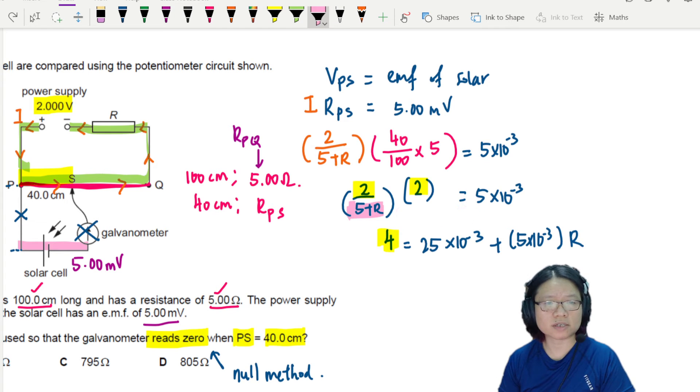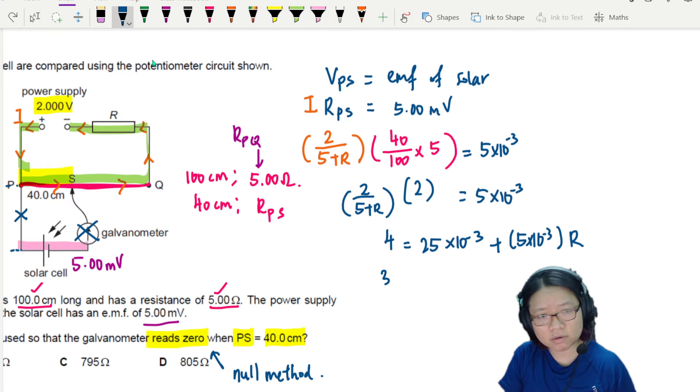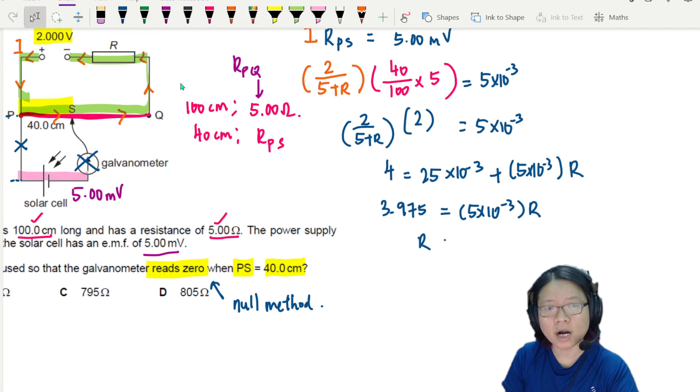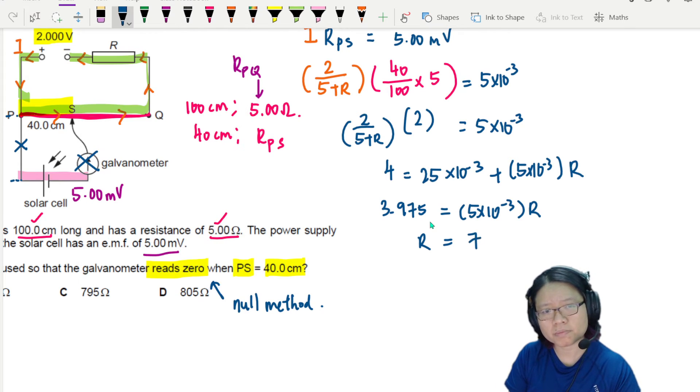So what's next? I guess now is to just simplify. I'm going to bring the 4 over to minus 4 minus 25 times 10 to the power of negative 3. This will give me 3.975. I'm going to keep all the significant figures because they gave me many SF in the raw data. So 3.975 is equal to 5 times 10 to the power of negative 3 R. So hence, I can find R now. R will be equivalent to 3.975 divided by 5 milli. That will give me 795Ω. So the answer is C.